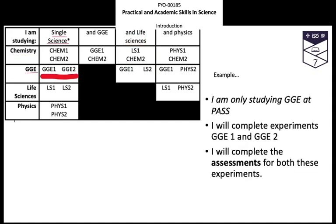Just another example: for single science GGE, you submit GGE one and GGE two — the same applies for any single scientist. That doesn't necessarily mean single honours; if you were doing physics and maths, for instance, then you'd just do the physics assessments and the physics experiments. Nice and easy, but again — ask if you're not sure.